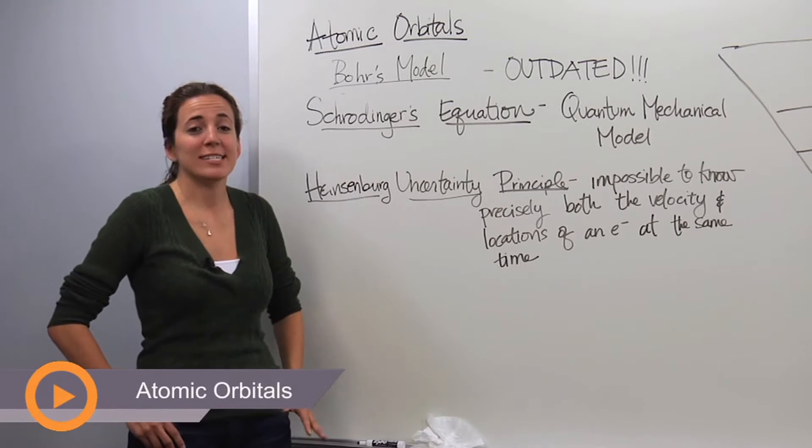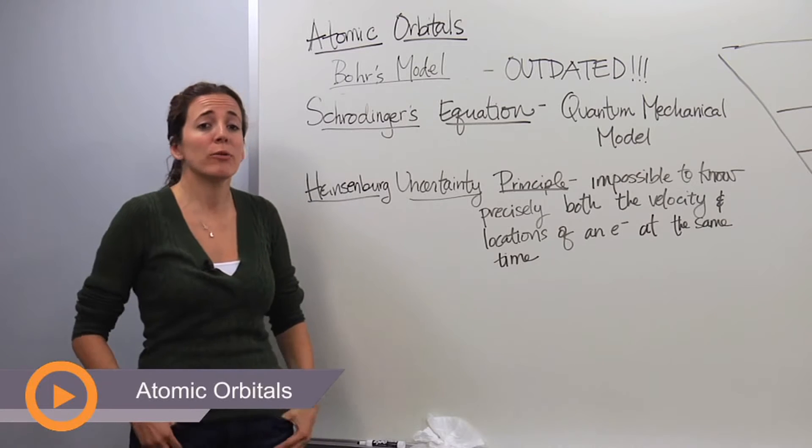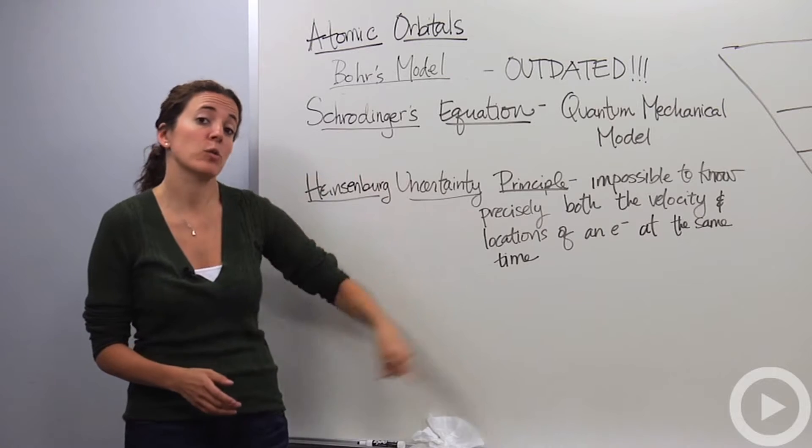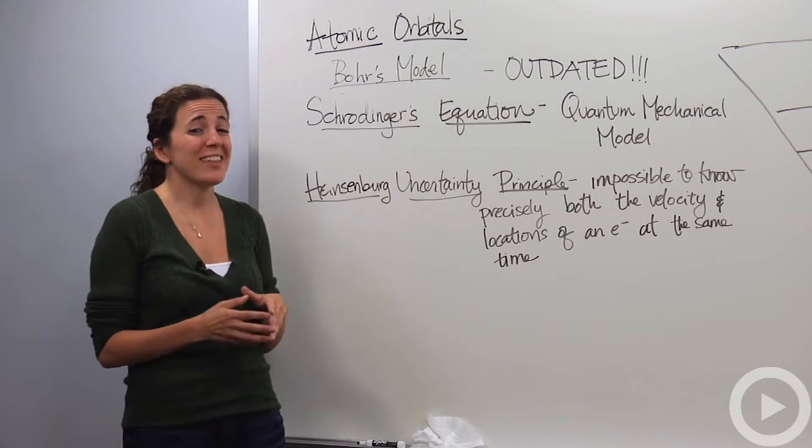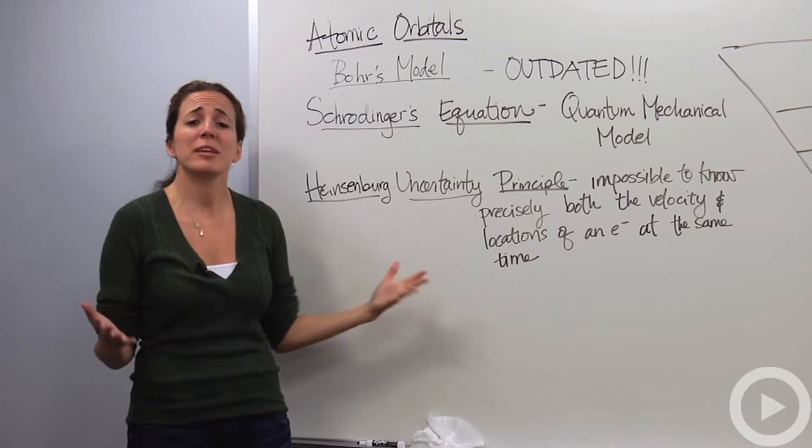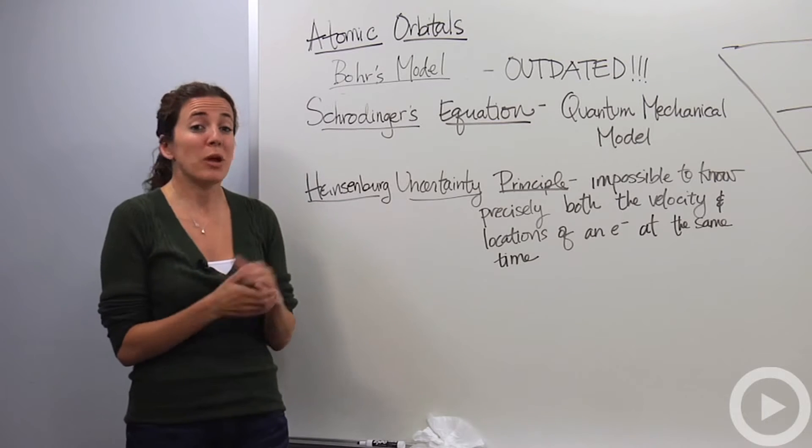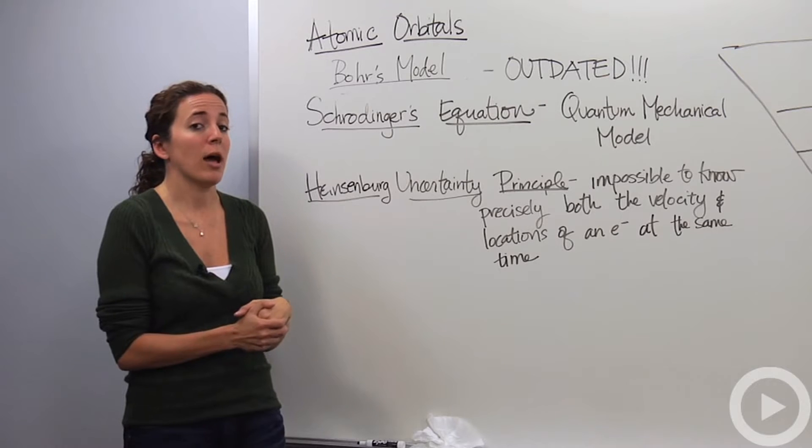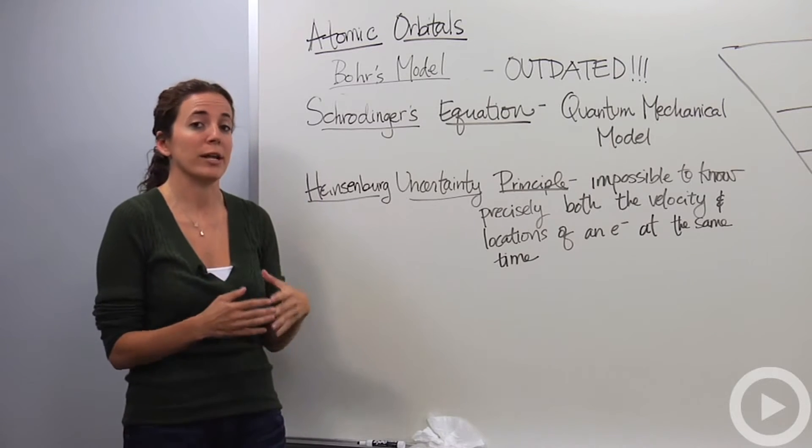Alright, so let's talk about the atomic orbitals. So we originally had the idea that an atom looks like a nucleus in the middle, a positively charged nucleus with the electrons orbiting around it. We're not going to use that model anymore, it's extremely outdated. It's great for simplistic ideas of how an atom behaves, but now we're getting more into chemistry and we're going to talk about more in-depth things.